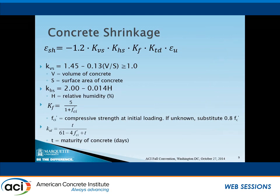The focus is on studying the shrinkage effect on deck cracking. So we used the AASHTO 2010 shrinkage equation to model the shrinkage in the concrete deck. For this equation we consider four parameters: KVS, which accounts for volume-to-surface ratio — based on the bridge geometry, KVS equals 1; KHS, which considers the relative humidity effect; KF, which considers the concrete compressive strength at initial loading — using the code-recommended 80% of f'c of 5 KSI, KF equals 1; and KTD, which considers the maturity of the concrete as a function of days.